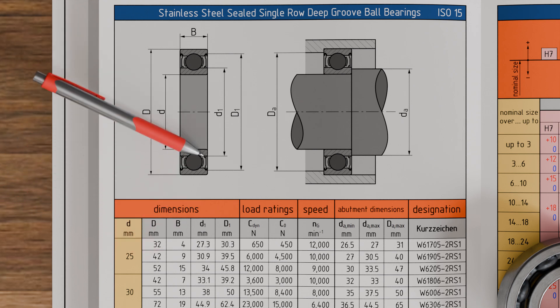Additionally, dimensions for the outer diameter of the inner ring are provided, which in our case is 30.9 mm. The inner diameter of the outer ring can also be looked up here. For our bearing, it is 39.5 mm.